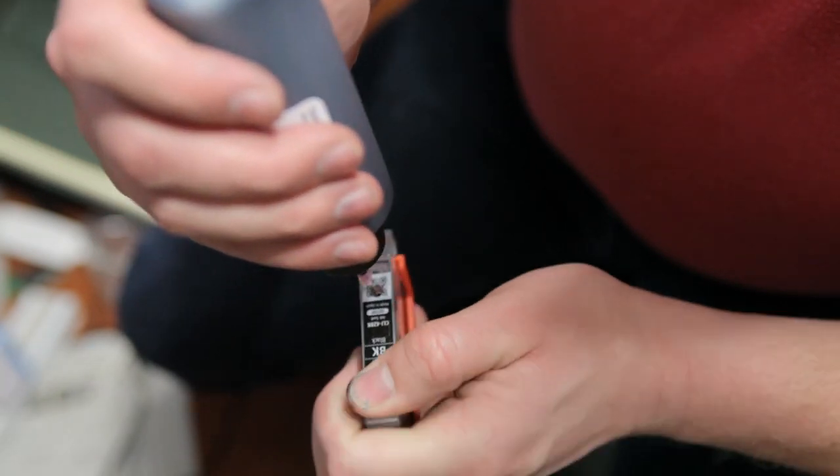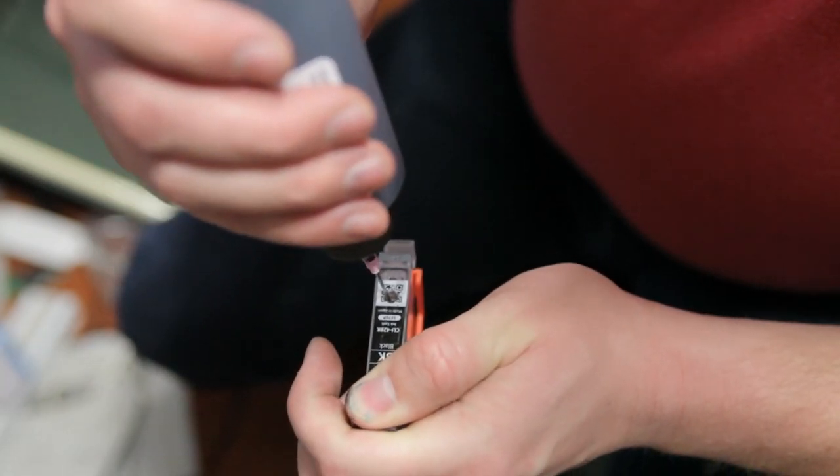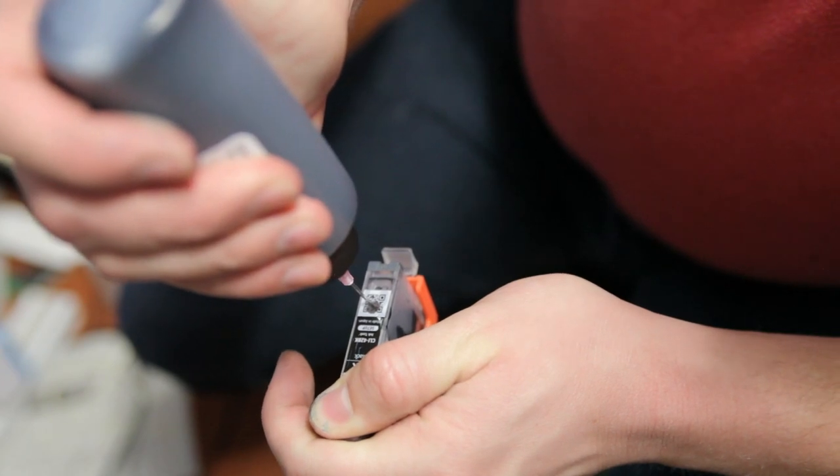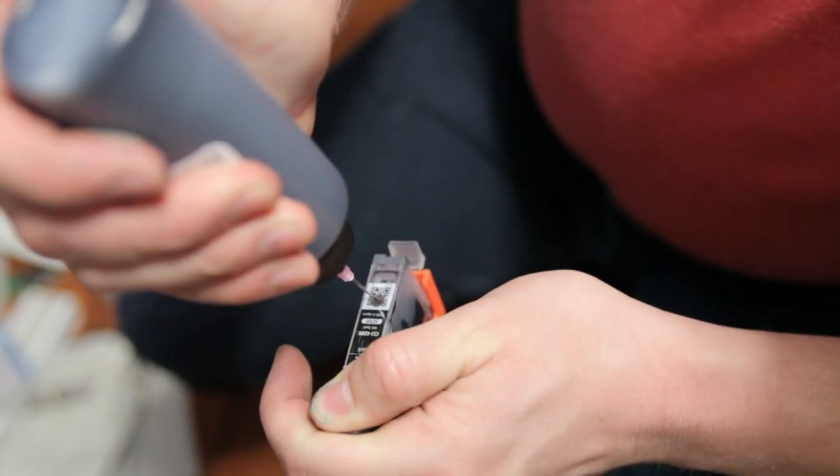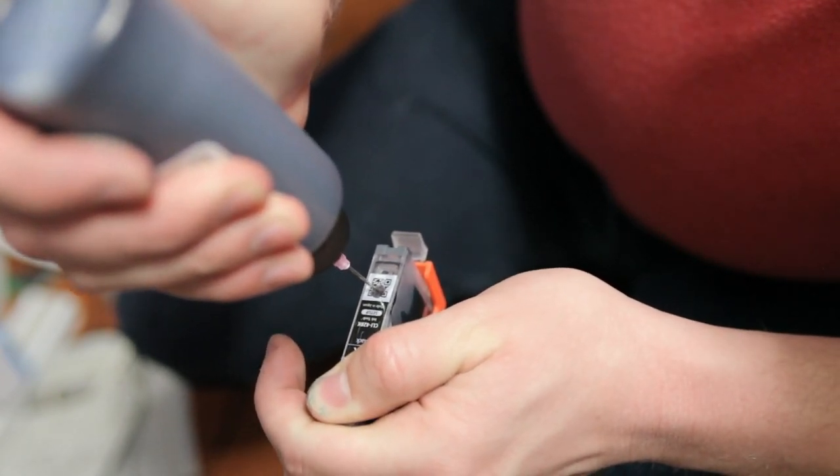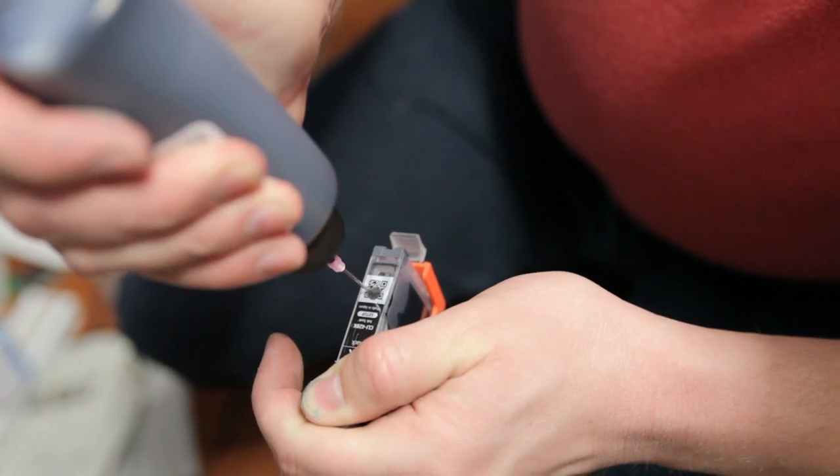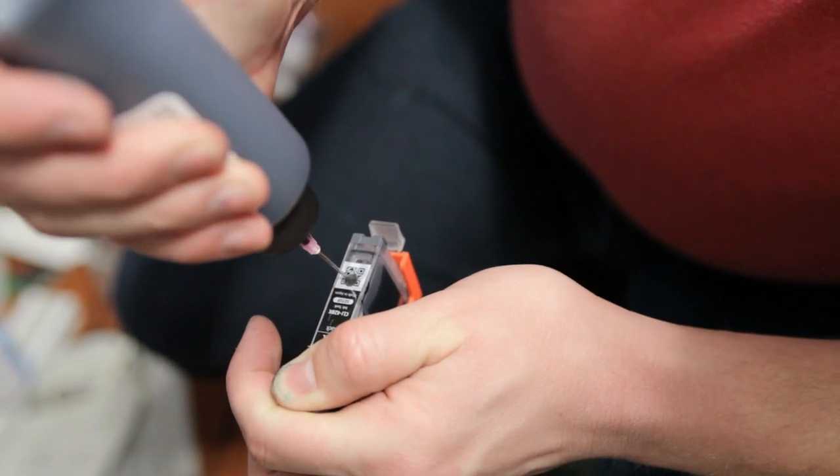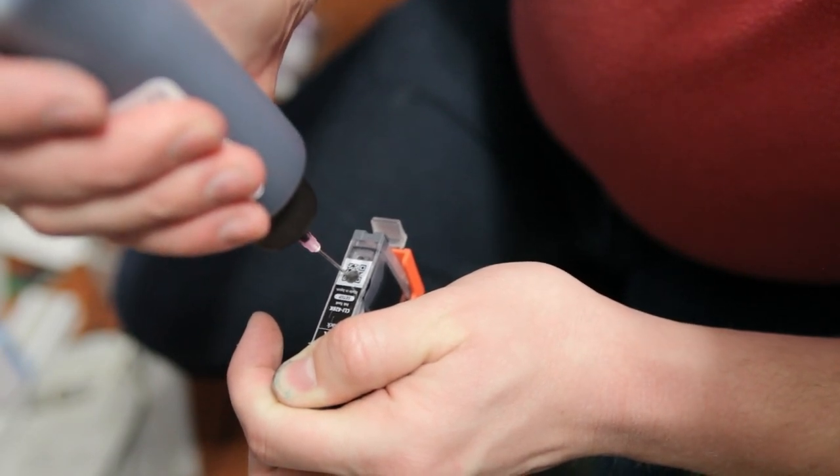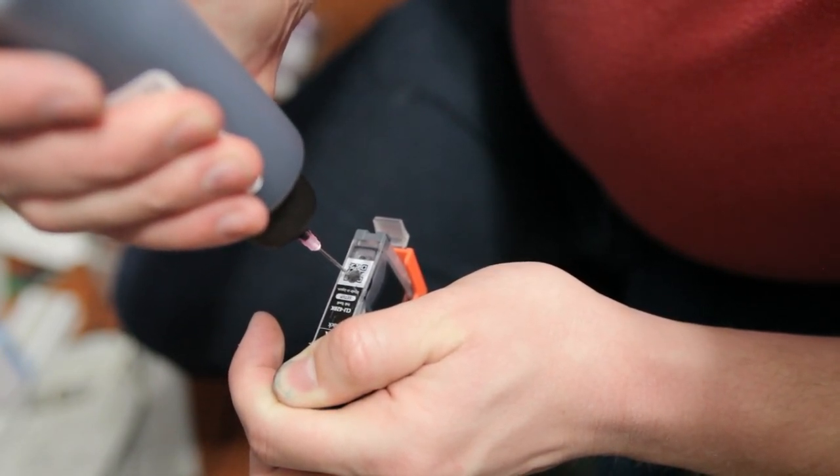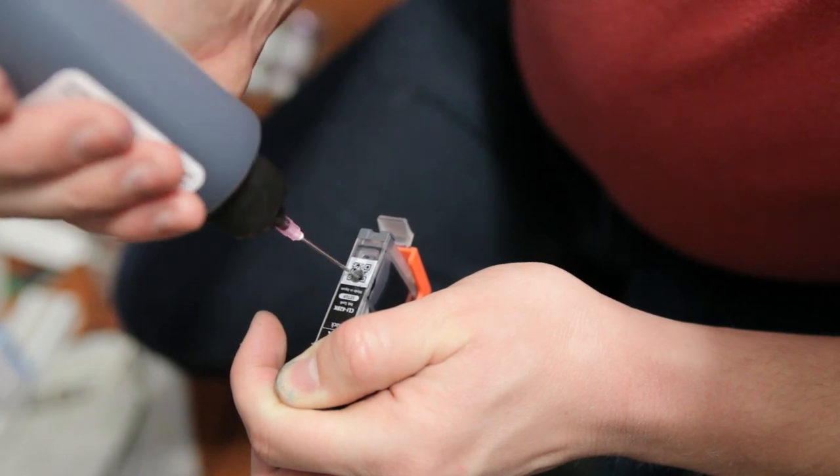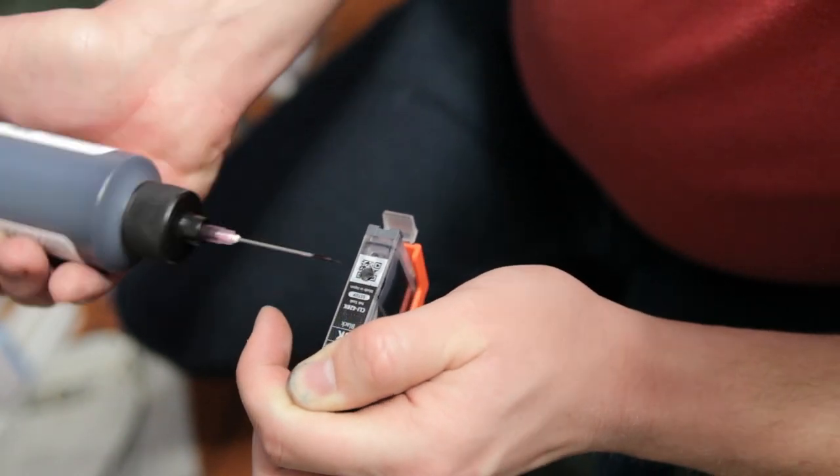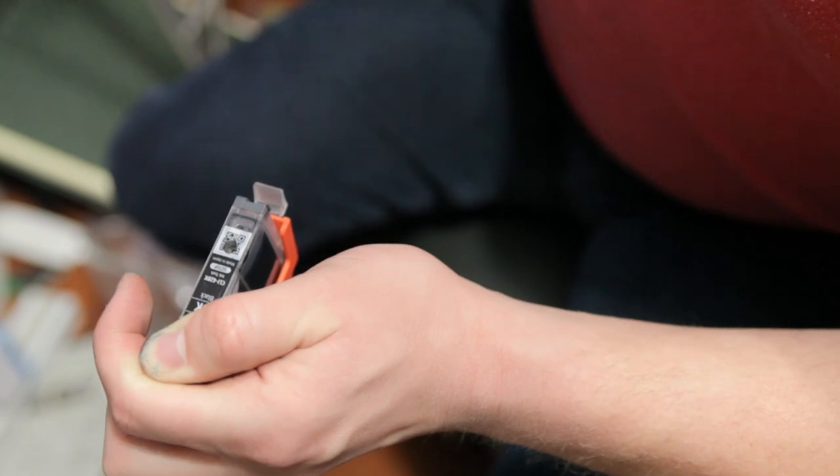Use tape or a thumb and cover that vent hole right there on the end. I'll show you that closer here in just a minute. Fill it up until about a quarter inch from the top. Take that out.